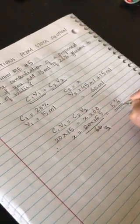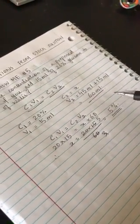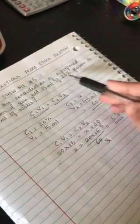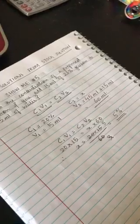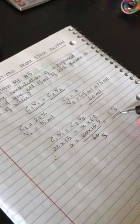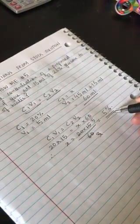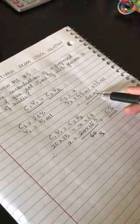So 20 times 15 divided by 60, which gives you 5%. So when you add 15 ml of 20% glucose and 45 ml of water, the new solution will have a concentration of 5% and the volume will be 60 ml.